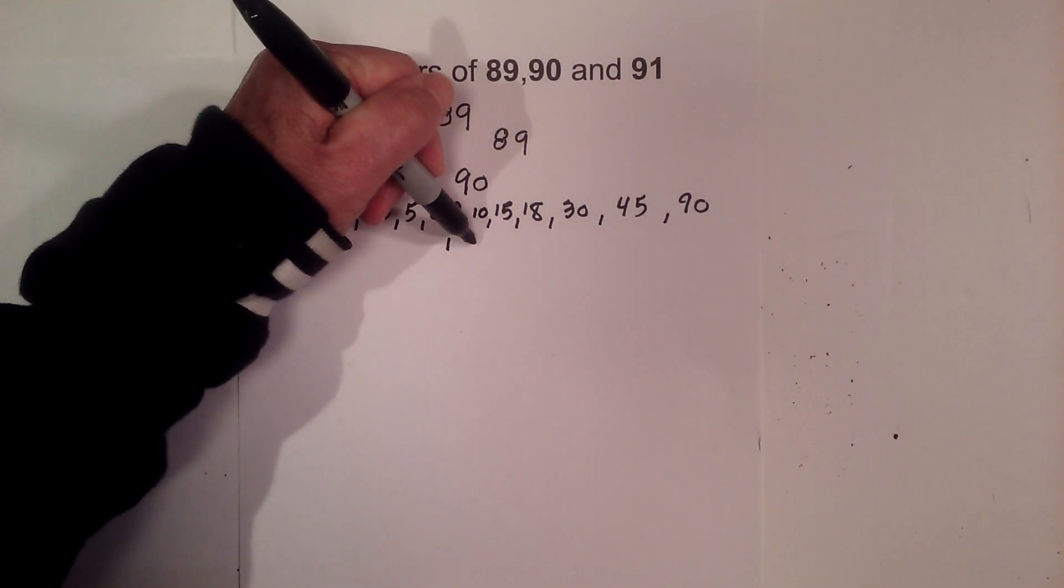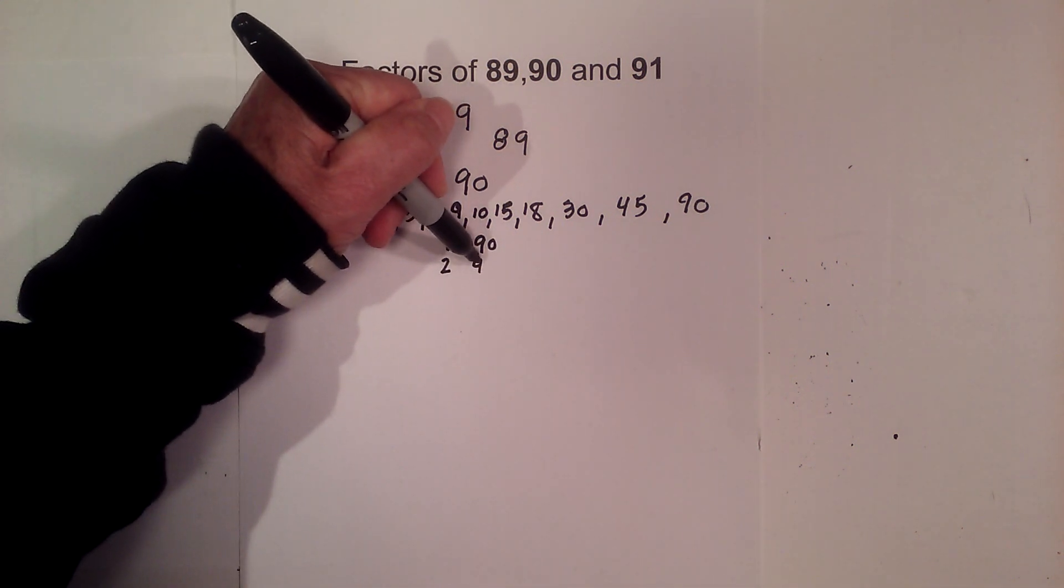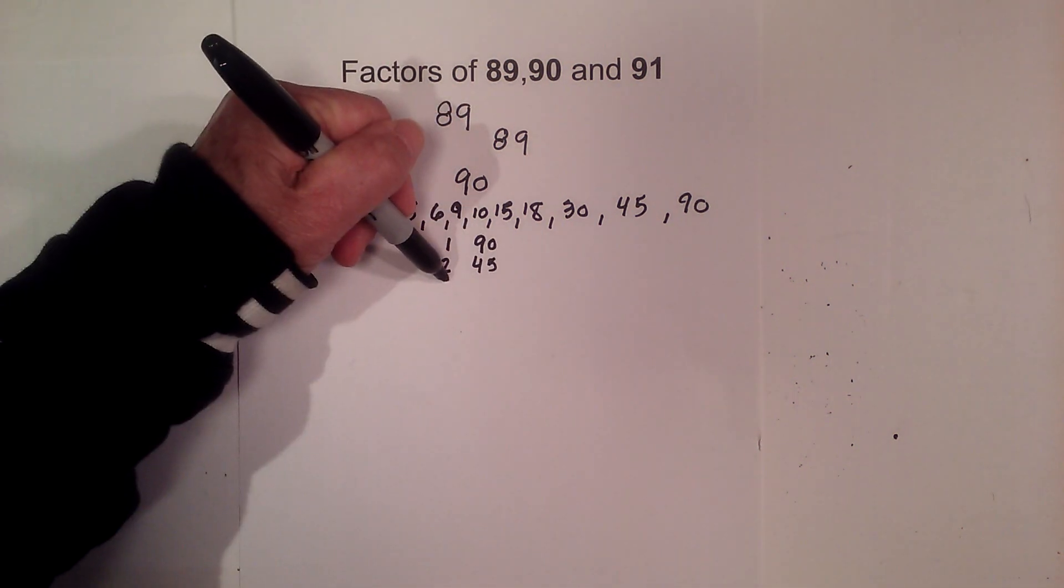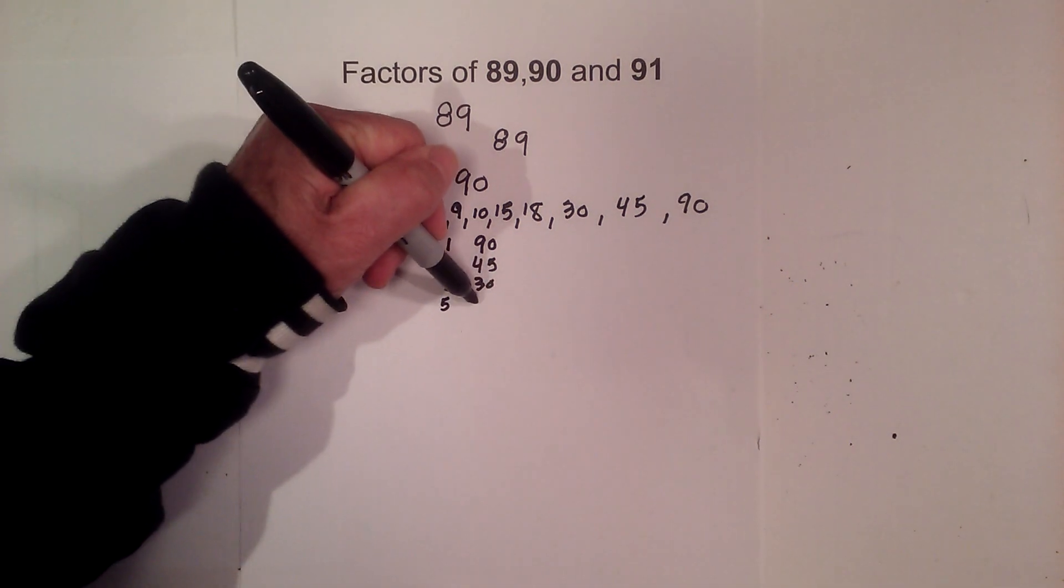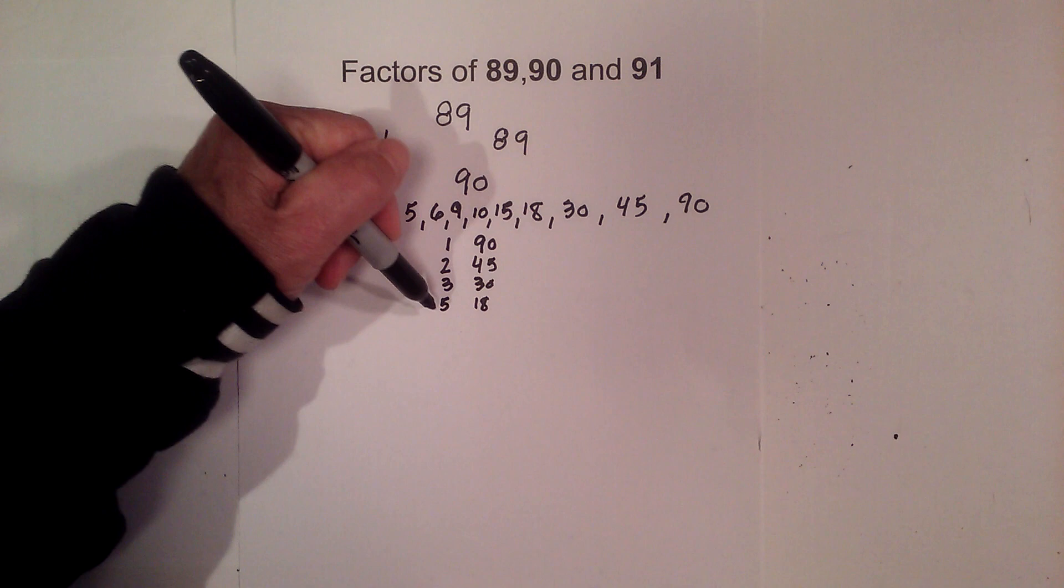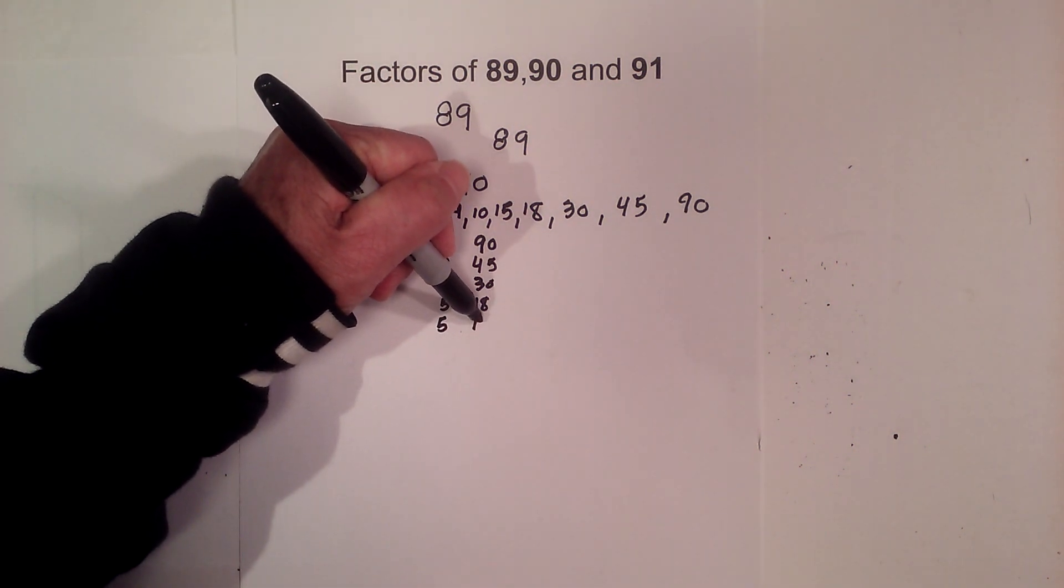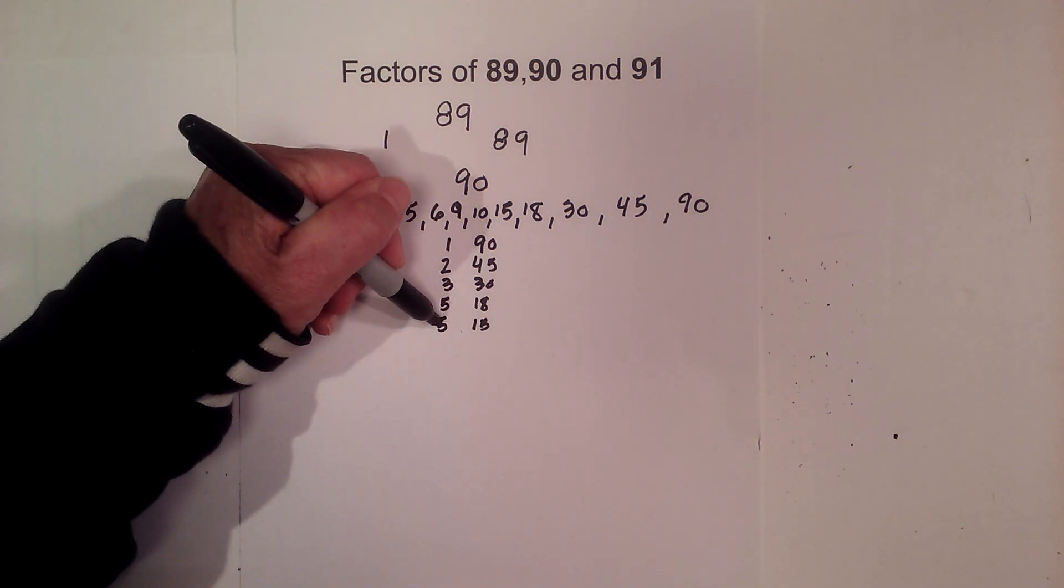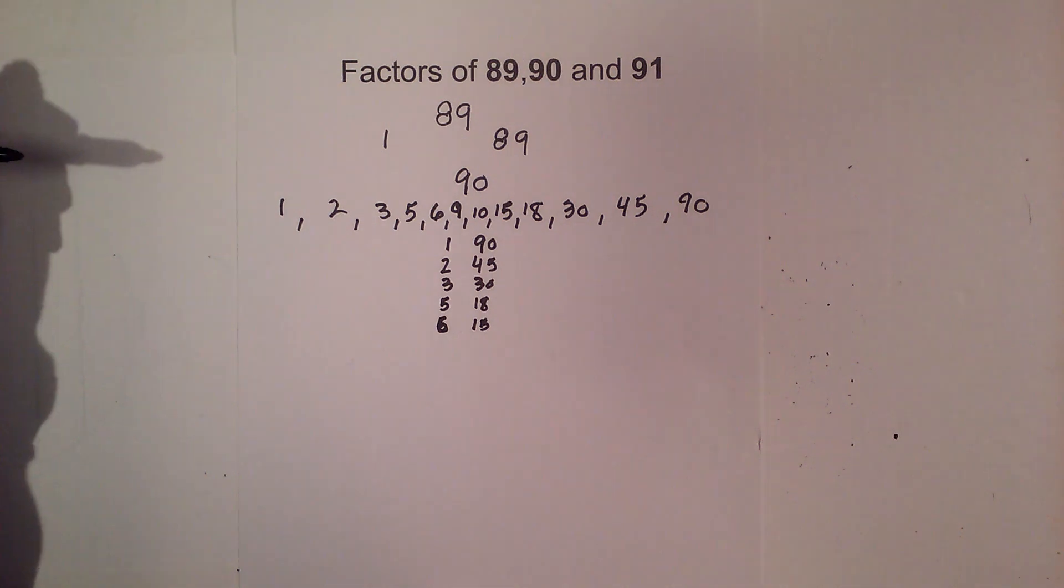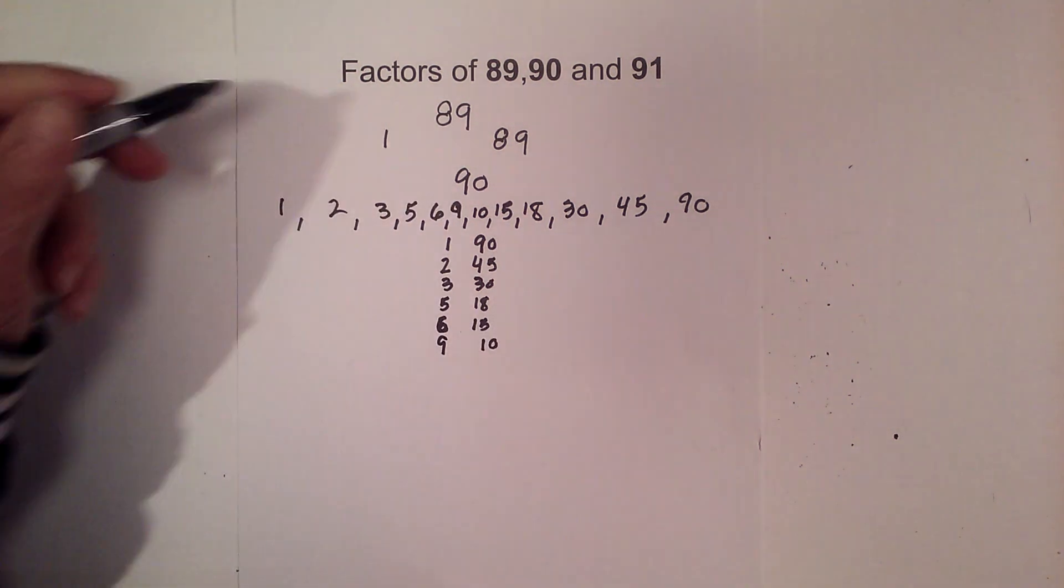And then the pairs are 1 times 90, 2 times 45, 3 times 30, 5 times 18, 5 times 15. I think I made a mistake. It's not 5 times 15, excuse me, it is 6 times 15, and then 9 times 10.